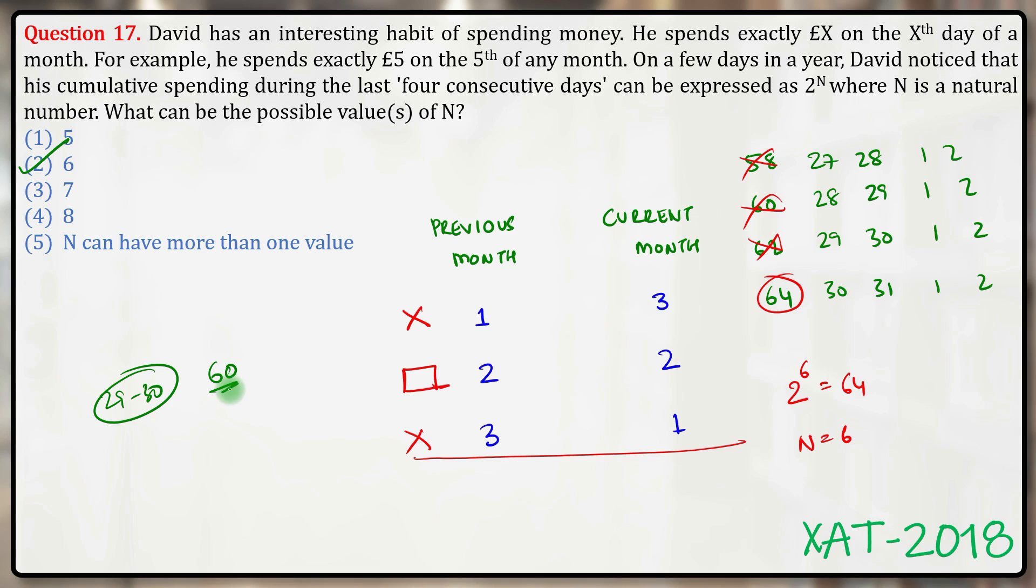because we have eliminated all other cases, the only case is that the power near to 60 is the only possible power. And therefore, 2 to the power 6 is the only possible case.